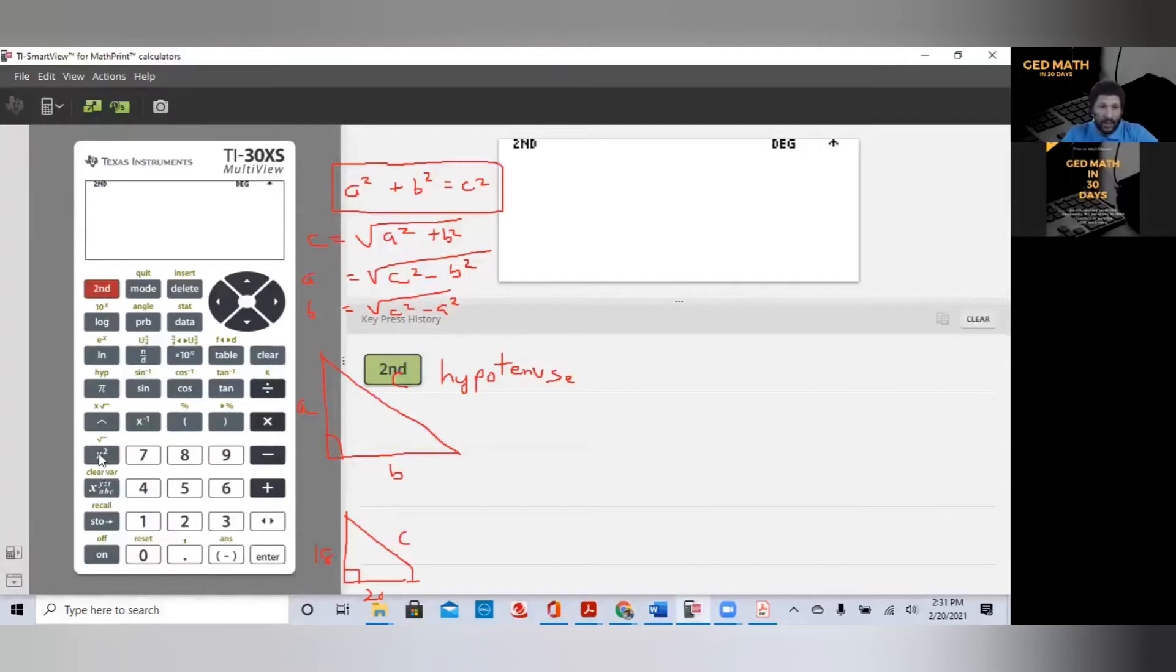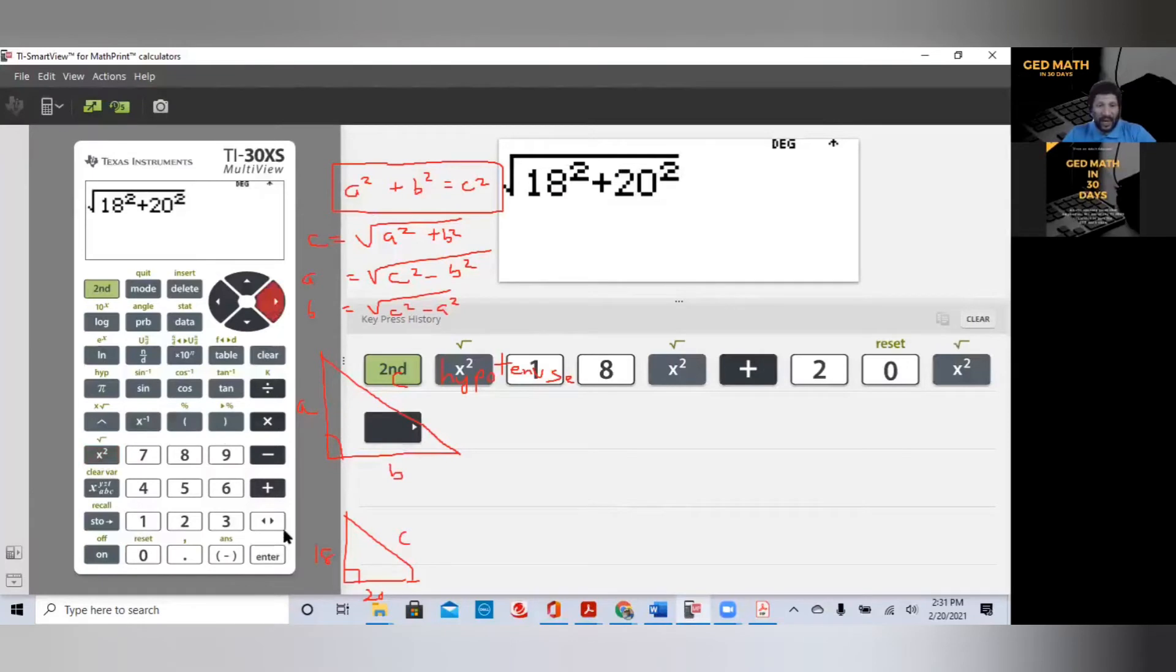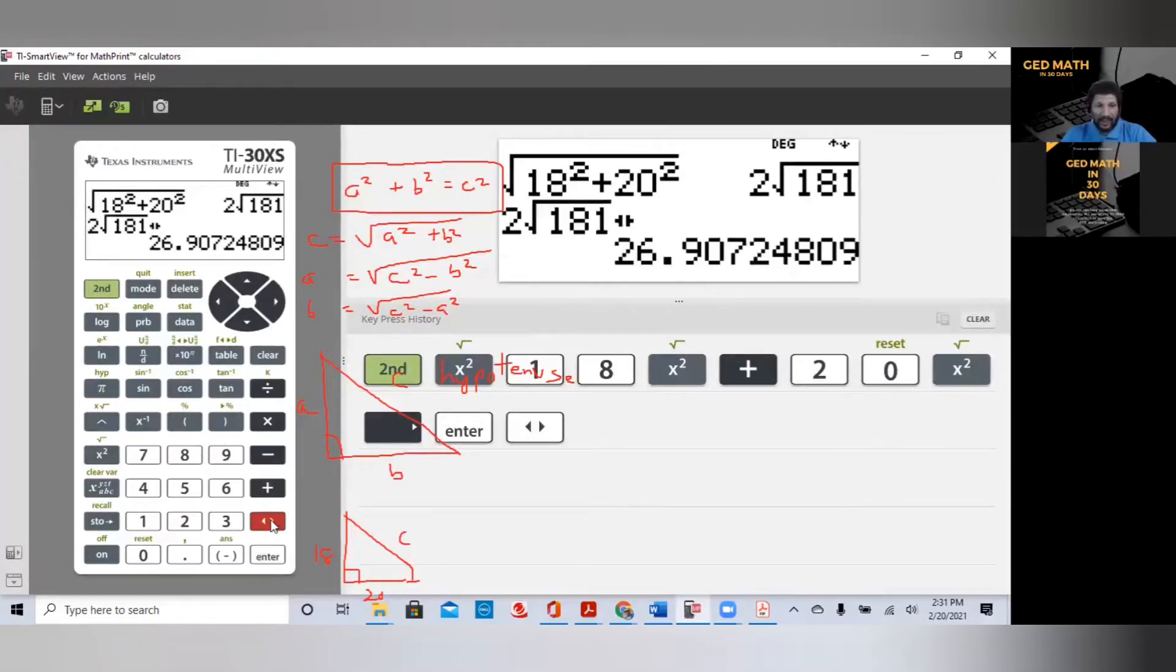We're going to hit second. We're going to hit the X squared button to give us our square root. We know A squared was 18, so 18 squared plus 20 squared. That's simple. Hit your right arrow. Hit enter. So, our answer is 2 squared over to 81. To change to a decimal, we hit our double arrows right above enter. And we now have our answer as 26.907. So, 26.907. That's simple.